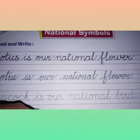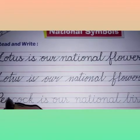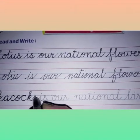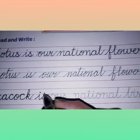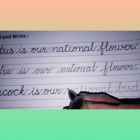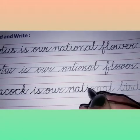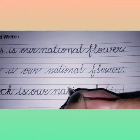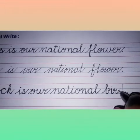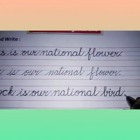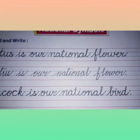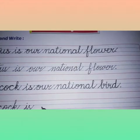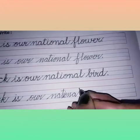Now come to the next sentence. Here you will read: Peacock is our national bird. So start tracing: P-E-A-C-O-C-K, Peacock, is our national bird. Children, in this lesson you are learning about our national symbols. P-E-A-C-O-C-K, Peacock is our national bird.